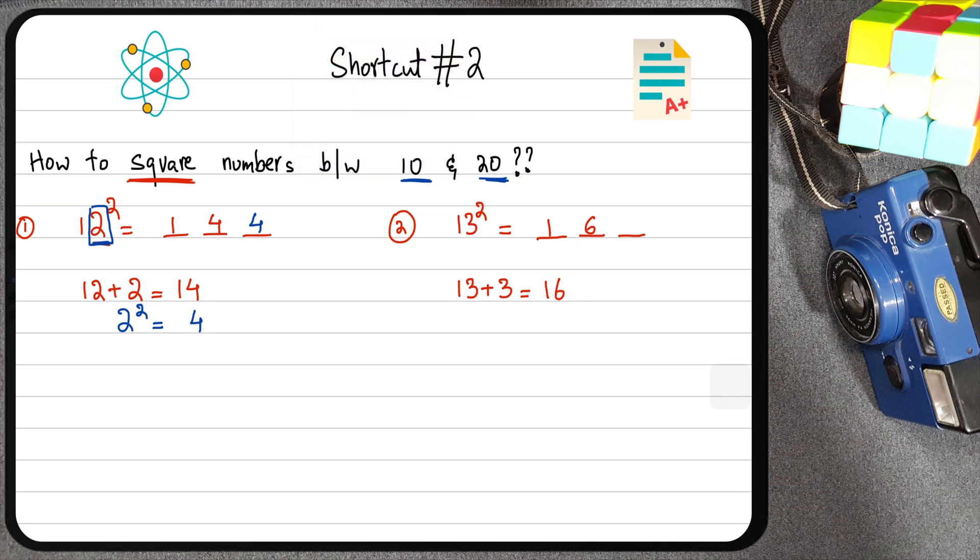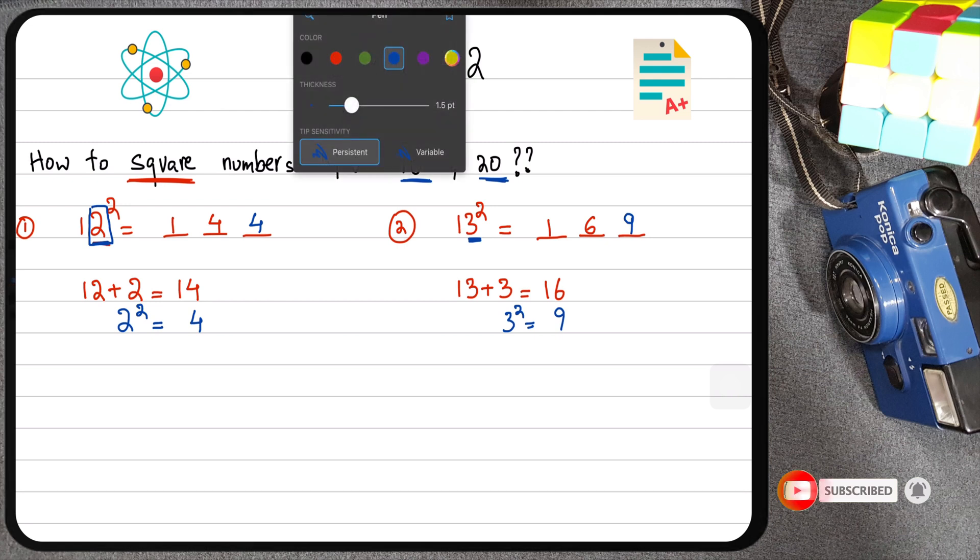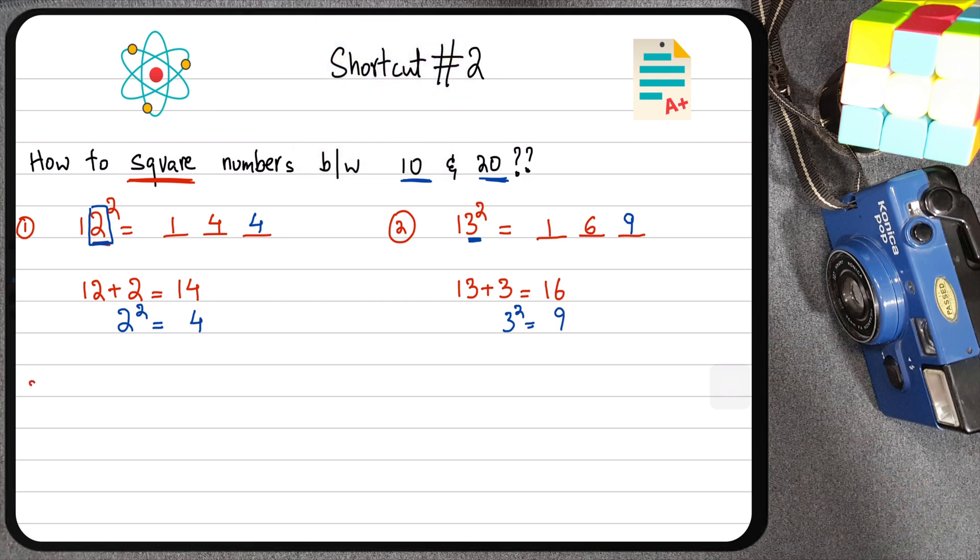And then for the last digit, again, I'm going to focus on what the last digit of the number that I'm squaring is, which is 3. So 3 squared is equal to 9. So I'm just going to punch in 9 here. So 169 is going to be my final answer. Hopefully, you're getting the hang of it. In case you're not, nothing to worry about. Just hang in there.